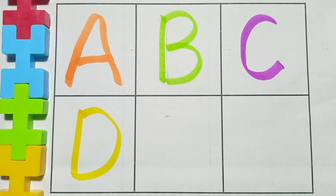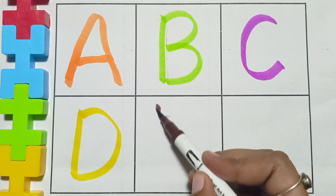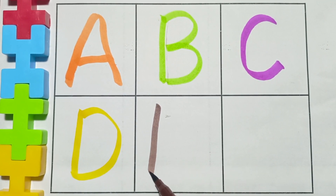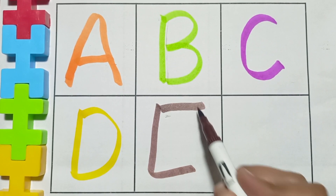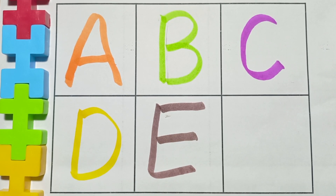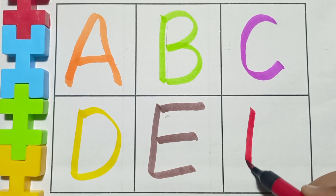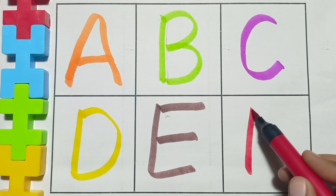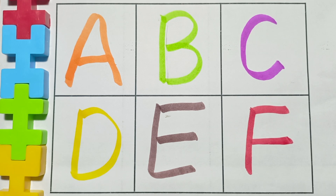Yellow color. E, E for elephant. Brown color. F, F for fish.